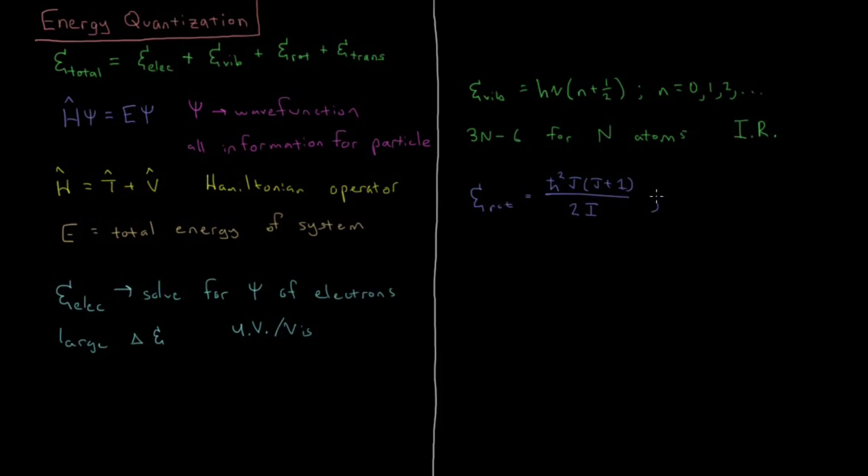There's more details on that in the section about rotational wave functions and the rigid rotor. And again this quantum number j starts at zero and goes up from there. So these energies are quadratically spaced so they get further and further away from each other as you go up the ladder of energy levels there. And now these are starting to get quite close to each other.